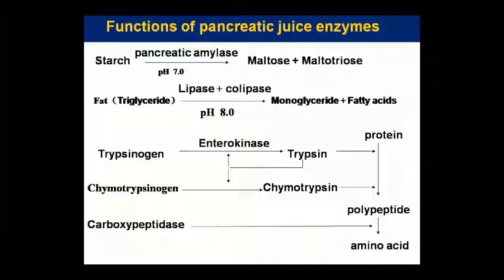Trypsinogen, with the help of enterokinase enzyme, is broken into trypsin. Trypsin breaks protein into polypeptides. Not only that, trypsin also converts chymotrypsinogen into chymotrypsin. Chymotrypsin also breaks protein into polypeptides. Then polypeptides are broken into amino acids by carboxypeptidase. So: protein → polypeptide (by trypsin and chymotrypsin), then polypeptide → amino acids (by carboxypeptidase).